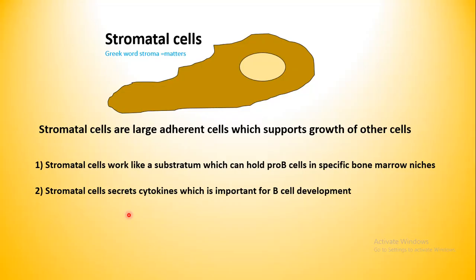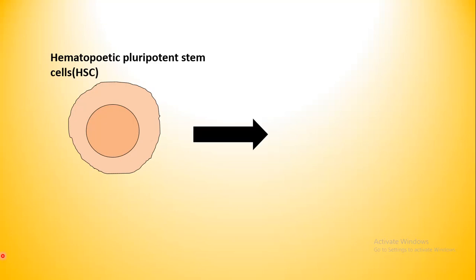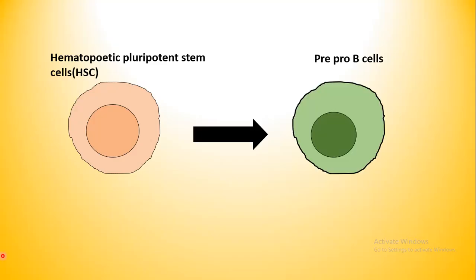We will talk about these cytokines and the signaling downstream to these cytokines and how they are involved in B-cell development. Inside the endosteal niche, there are hematopoietic pluripotent stem cells, and these can give rise to lymphoid progenitor cells. Ultimately, this lymphoid progenitor would give rise to a pre-pro-B cell, which is a totally immature stage of a B-cell. At this stage, the B-cell expresses some adhesion molecules and also a B-cell lineage marker B220.